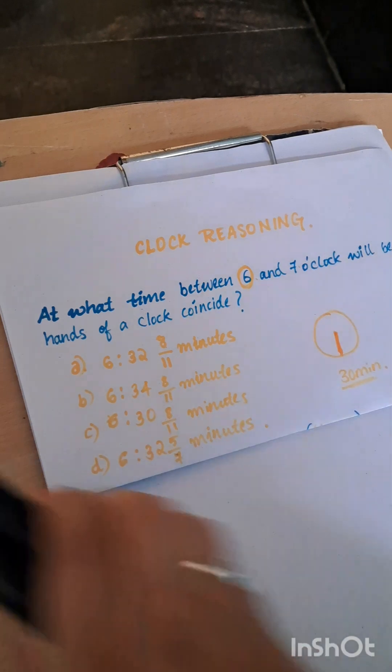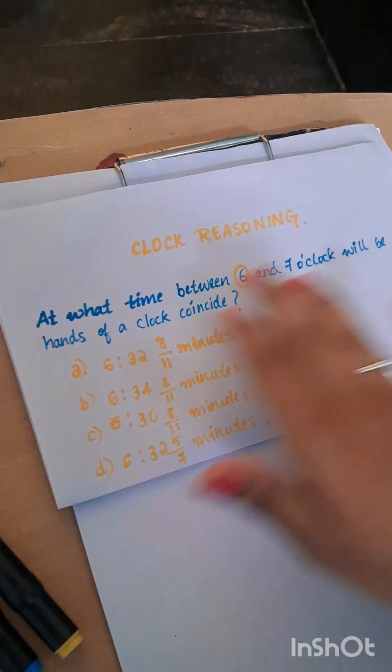Hello everyone, welcome back to my YouTube channel. In this video we are going to see a question from clock reasoning. The question here says, at what time between 6 and 7 o'clock will the hands of a clock coincide?